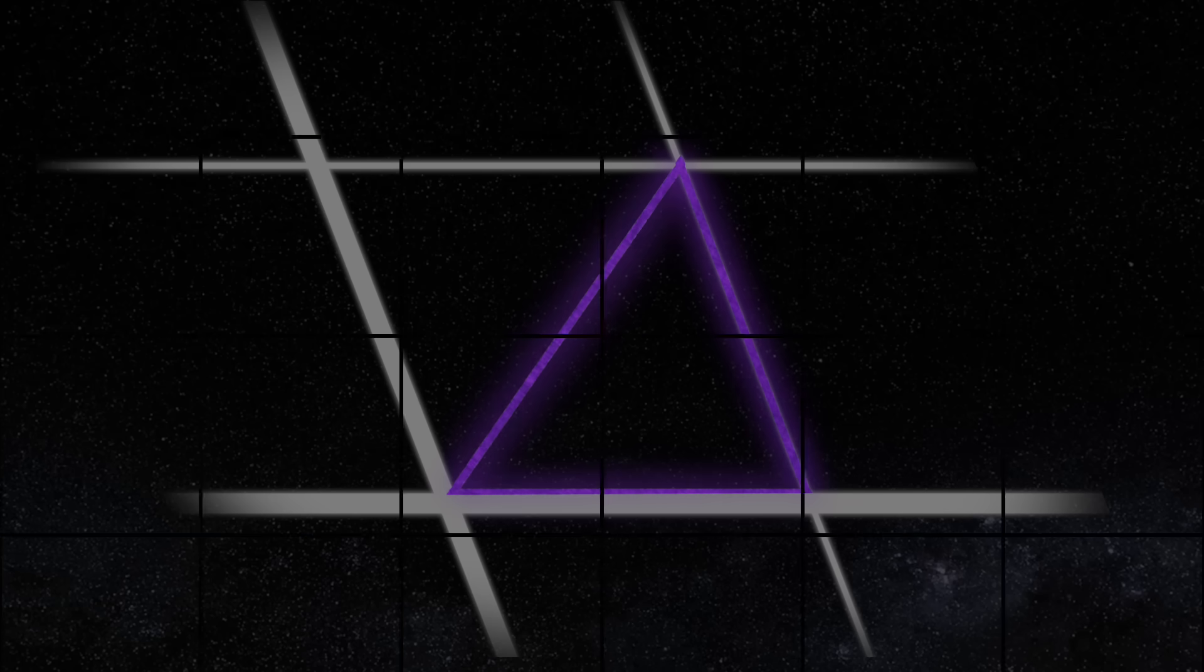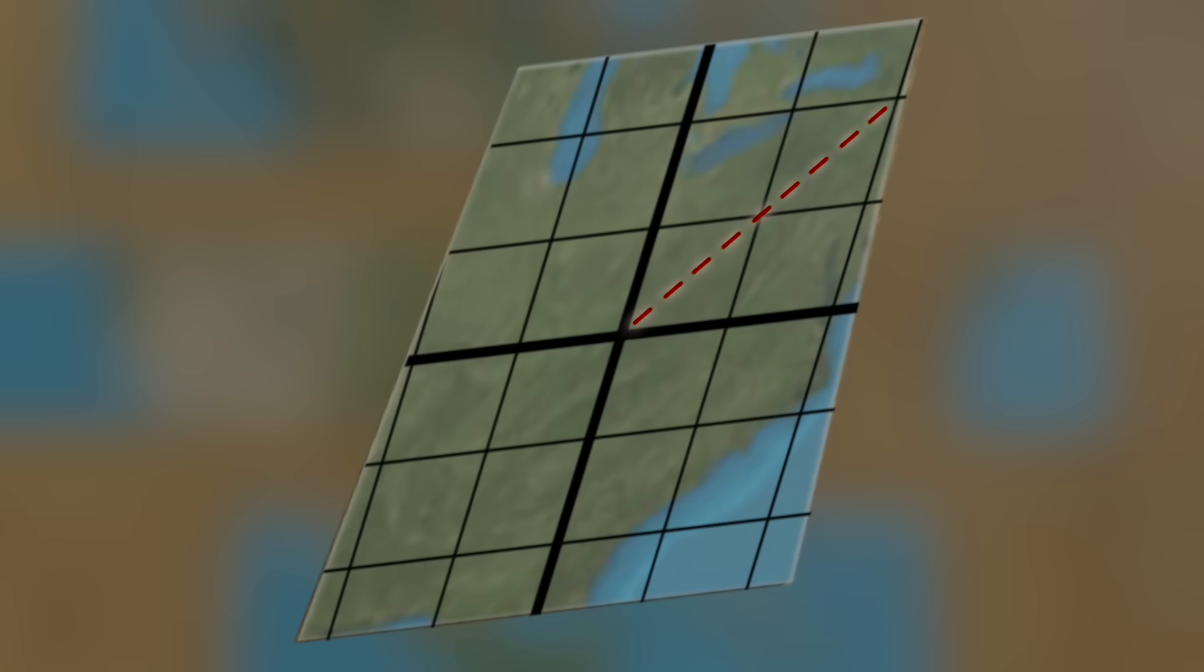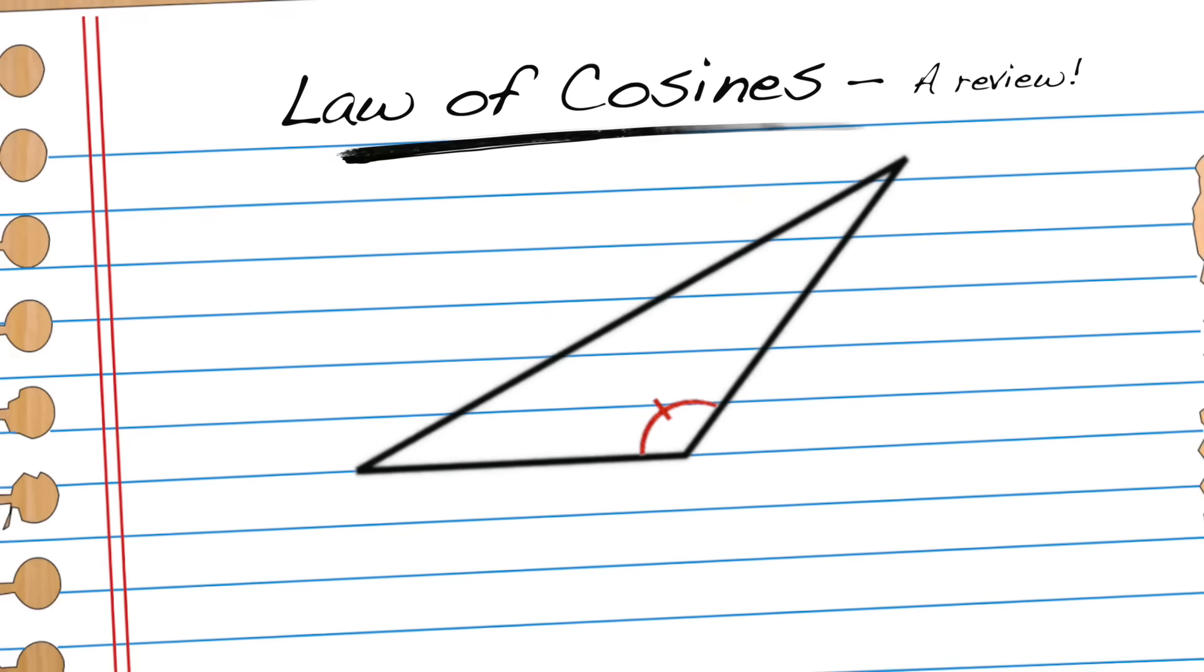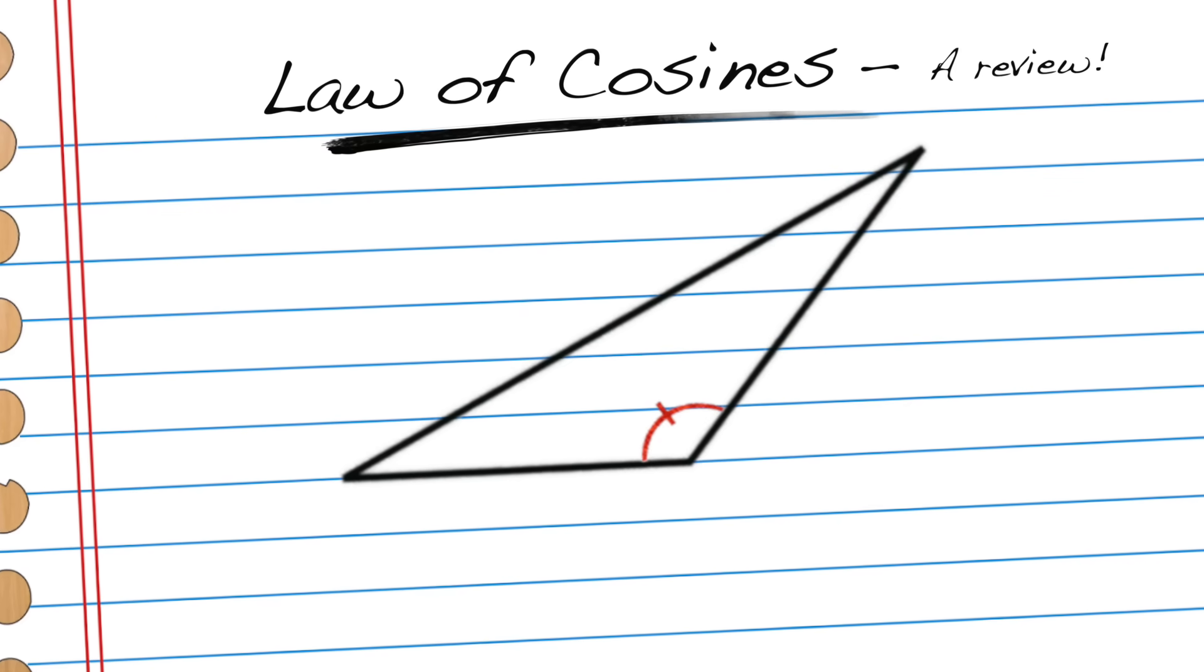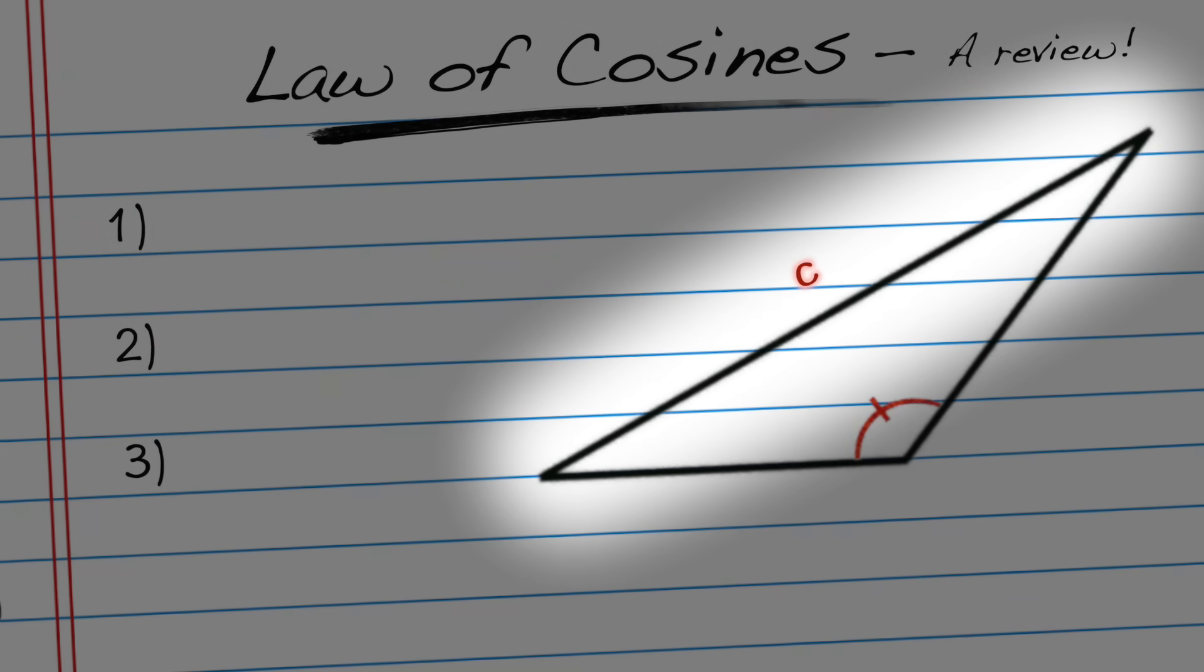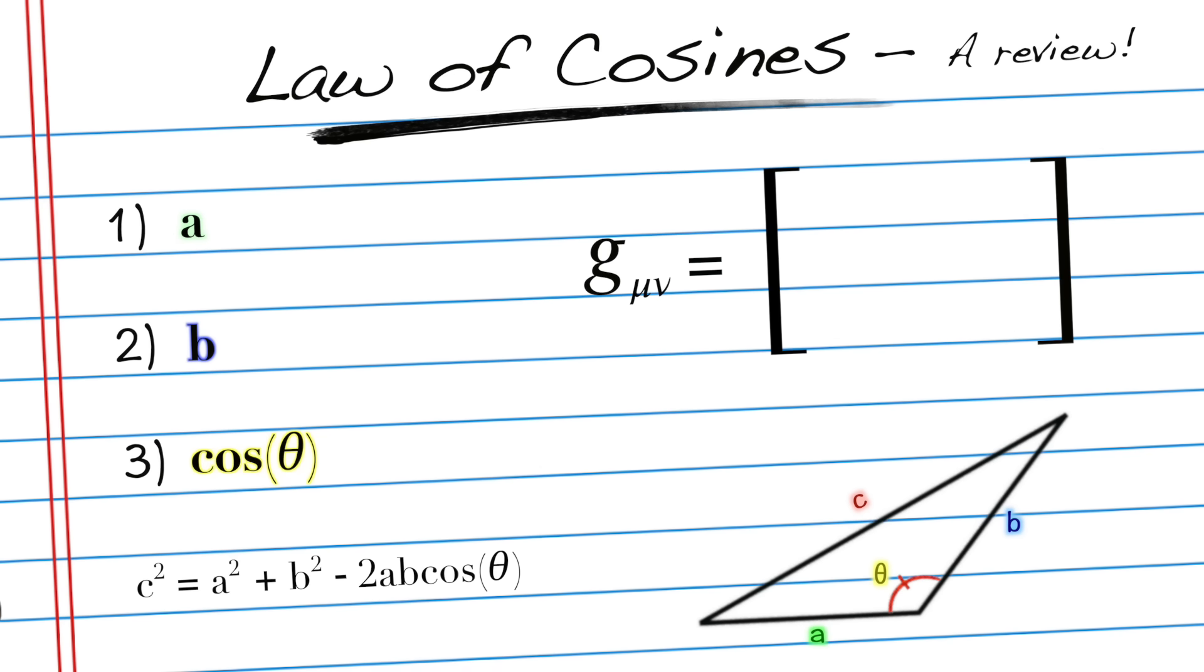So your distance element goes from being the hypotenuse of a right triangle to being one of the sides in an obtuse or an acute triangle. And if you remember the extension of the Pythagorean theorem from basic geometry, you'll know that you need exactly three numbers to calculate the length of the side of a non-right triangle. You need the length of the first side, the length of the second side, and the cosine of the angle between them. And voila! This is where your three values of the metric come from.